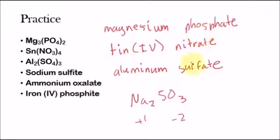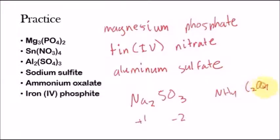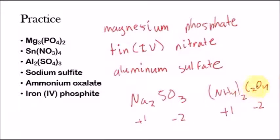Ammonium oxalate. Ammonium is NH4+. Oxalate is C2O4. Ammonium has a plus one charge and oxalate has a minus two charge. We flip: the two goes on the ammonium and the one on the oxalate. So the formula is (NH4)2C2O4 — ammonium oxalate.